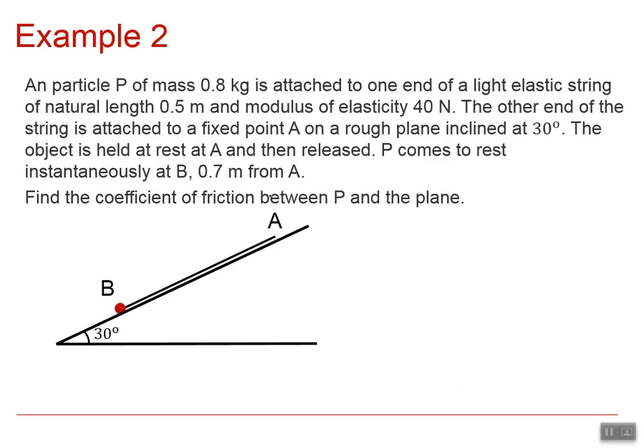Okay, so now we're going to have a look at another example. Here we've got our particle of mass 0.8 kilograms on an end of a light elastic string, natural length 0.5 and modulus of elasticity 40. The other length of the end of the string here is attached to a point A on a rough plane inclined at 30 degrees. So we're going to hold the object at A and then release it. And it's going to come to rest here at B, which is a distance of 0.7 meters from A. So we're going to try and find the coefficient of friction between P and the plane.